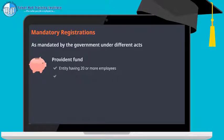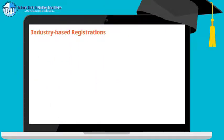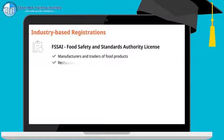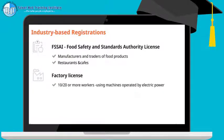Industry-based registrations are based on the business activity of the entity. If you are carrying any activity related to a special industry, registration is necessary for your organization. FSSAI (Food Safety and Standards Authority) license is mandatory for businesses related to food, such as manufacturers and traders of food products, and for restaurants and cafes. Factory license is mandatory for every factory having 10 or more workers where manufacturing processes include machines operated by electric power, or 20 or more workers in any other case.